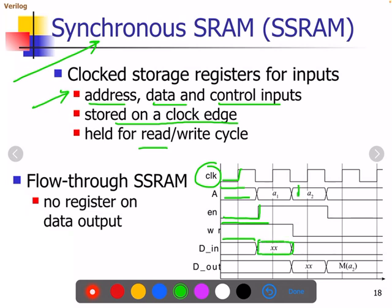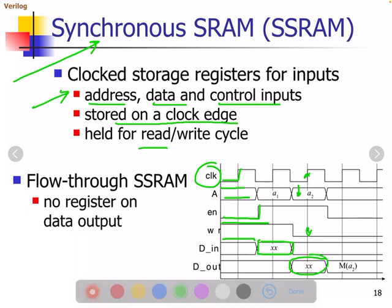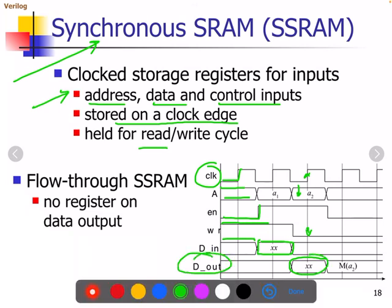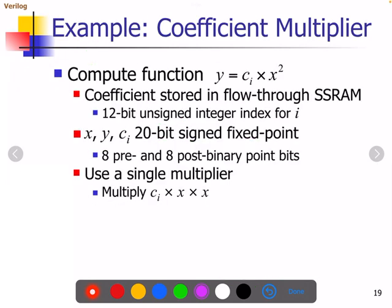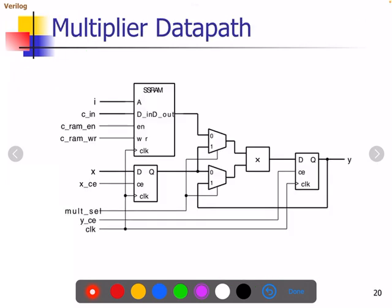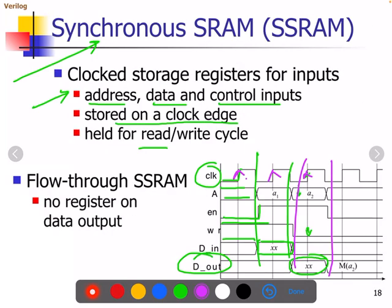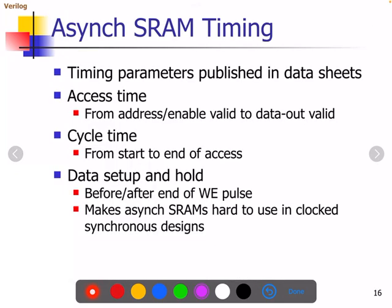Address is available, clock is enabled, write operation is disabled — that means read operation — and data is read. D out gives you the data. So the first cycle is for write operation and the second is for read operation. Everything happens with the positive edge of the clock signal. That is about RAM. In the next class, we will be seeing different types of ROM available.